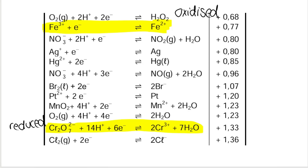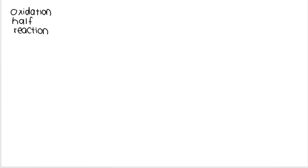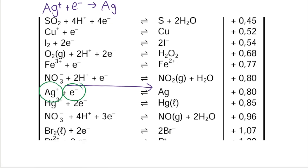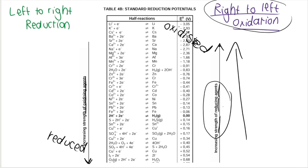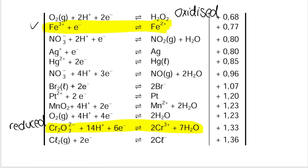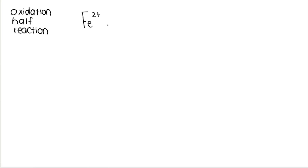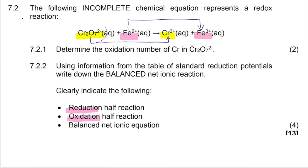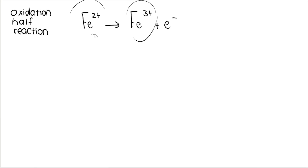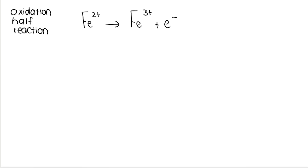Let's write down the oxidation half reaction first. We always write the oxidation half reaction from right to left on the table. So the first equation we come across is our oxidation half reaction — we write it down backwards. Fe²⁺ comes first, then an arrow, then Fe³⁺ + e⁻. And it makes sense looking at the given equation: on the left-hand side we had Fe²⁺, on the right-hand side Fe³⁺. The oxidation number increased from plus two to plus three, and an increase means oxidation took place.